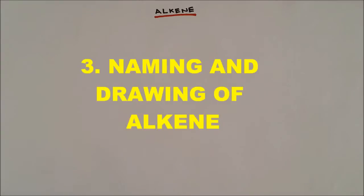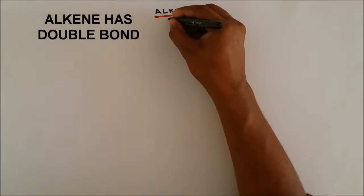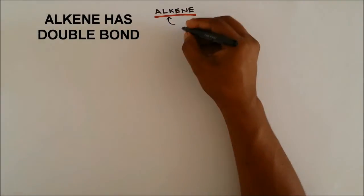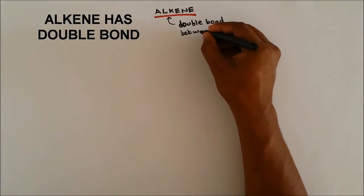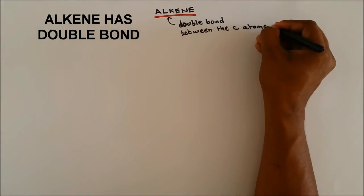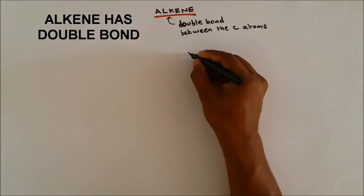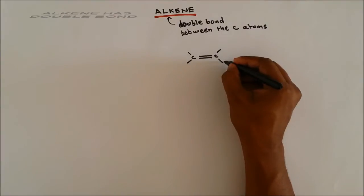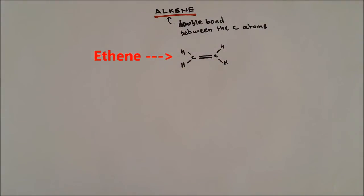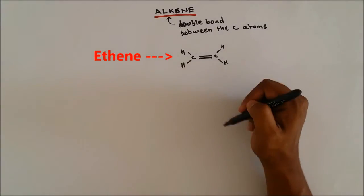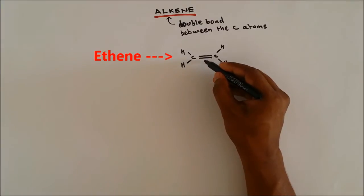Now the important features of alkene is that it contains a double bond between the carbon atoms. So if you take this alkene molecule which is ethene, as it contains two carbons, you can see that between these two carbons there is a double bond.